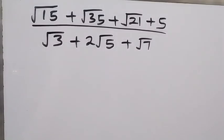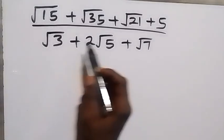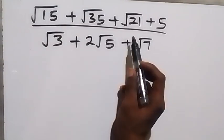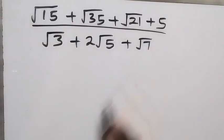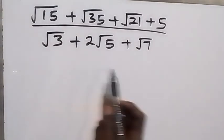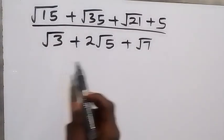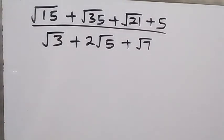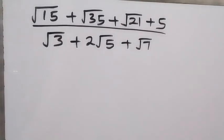Hello, you are welcome. How to solve this problem: (√15 + √35 + √21 + 5) all over (√3 + 2√5 + √7). Like this video and subscribe to my channel, thank you.